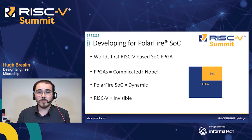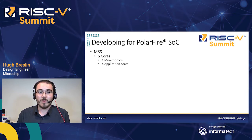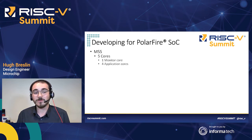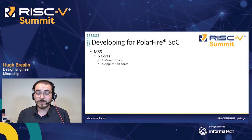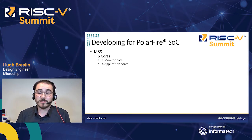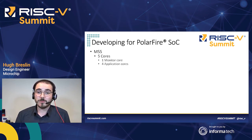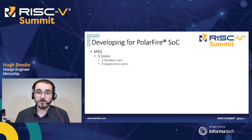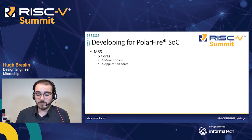Let's look at the product in more detail, starting with the MSS. We have five cores in the microcontroller subsystem. One is a monitor core — that's a SiFive E51. The other four are application cores, which are SiFive U54s. The application cores boot up and run Linux, bare metal, or RTOS applications — they're the worker cores. The monitor core can keep an eye on the system, boot it up, restart a hart that may have crashed, and provide some system services between harts.